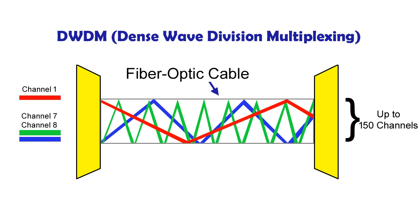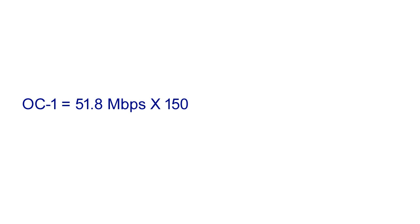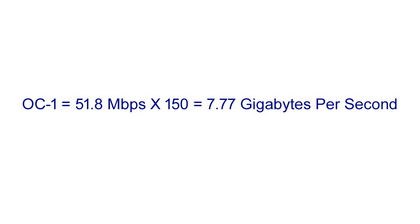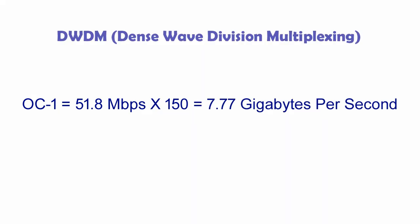For example, one OC-1 line runs at 51.8 megabits per second. If you have 150 signals all over the same fiber optic cable, you now have the capability of 7.77 gigabytes per second. DWDM became more popular and widely used by long distance carriers because it was much less expensive to replace the previously used SONET or OC-X lines and equipment with DWDM than to add more fiber optic lines.